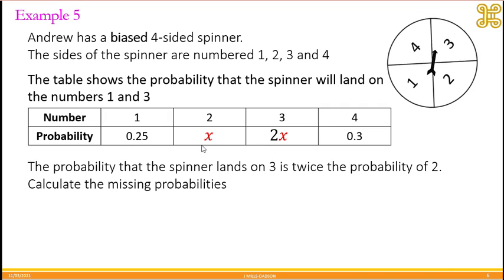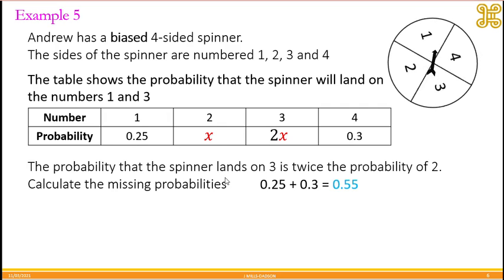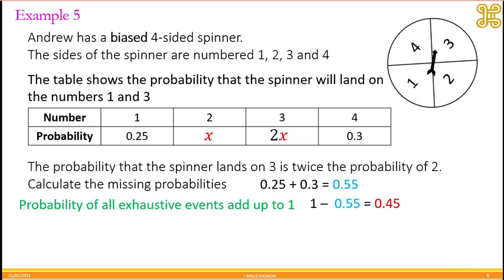Now, in probability, when you add all answers, you add up to 1. So let's work out what we know. 0.25 plus 0.3 is 0.55. That is not 1 yet, so let's look at the remaining. 1 minus 0.55 is 0.45.